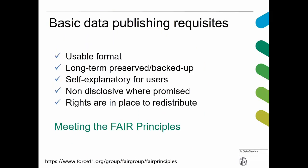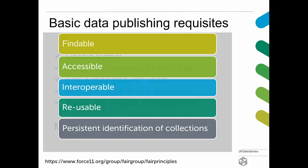Before getting to legal issues, there are some basic data publishing requisites. When a dataset is received, it needs to be in a usable format, long-term preserved and backed up, with self-explanatory user documentation. The data needs to be non-disclosive where promised, and rights must be in place to distribute. Governance and licensing are important means to enable this. If you're not familiar with the FAIR principles — findable, accessible, interoperable, reusable — these are the basic requisites, and having a persistent identifier wraps that all up nicely.